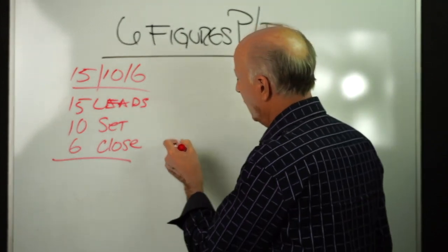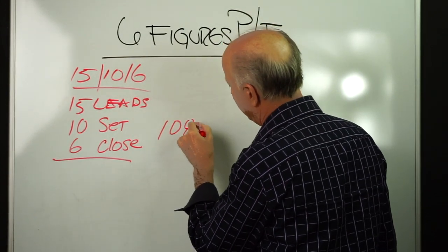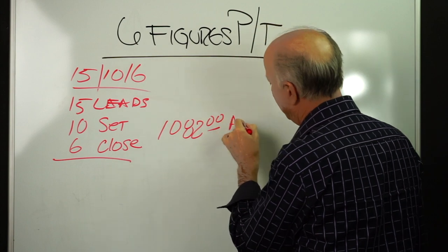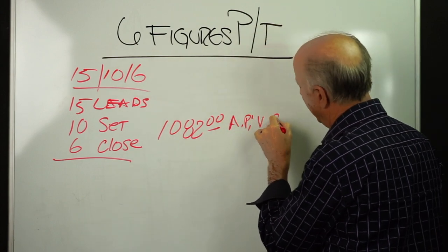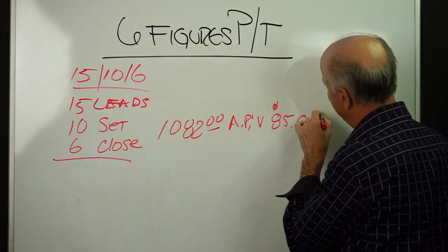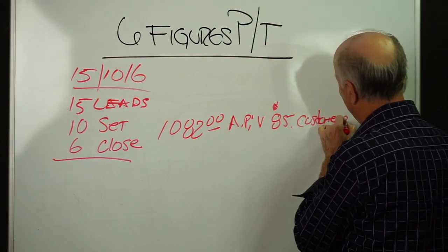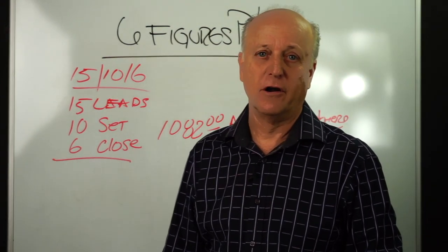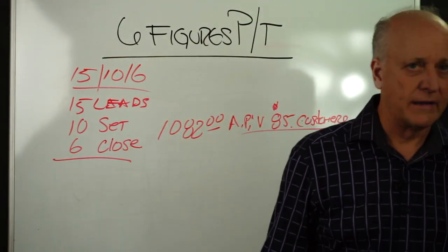Now again, we're going to take the same thing, which is $1,082 per app APV, or $85 to the customer. That's our averages we're working with here, and that's the national average, been that way for a long time, so it's pretty accurate.